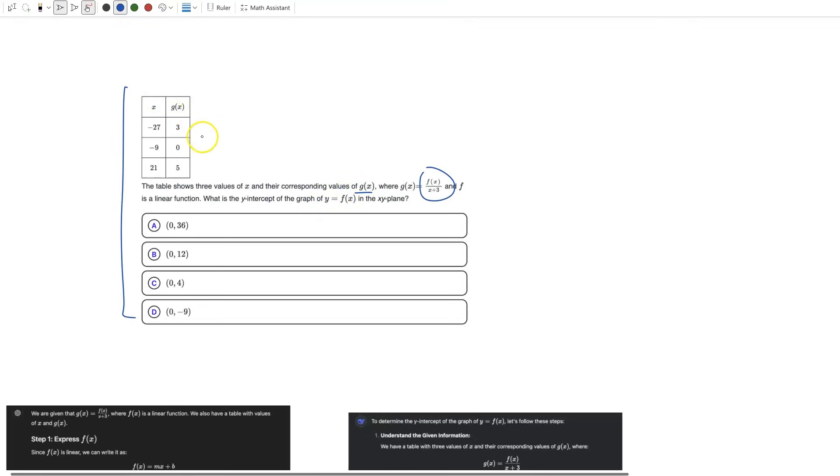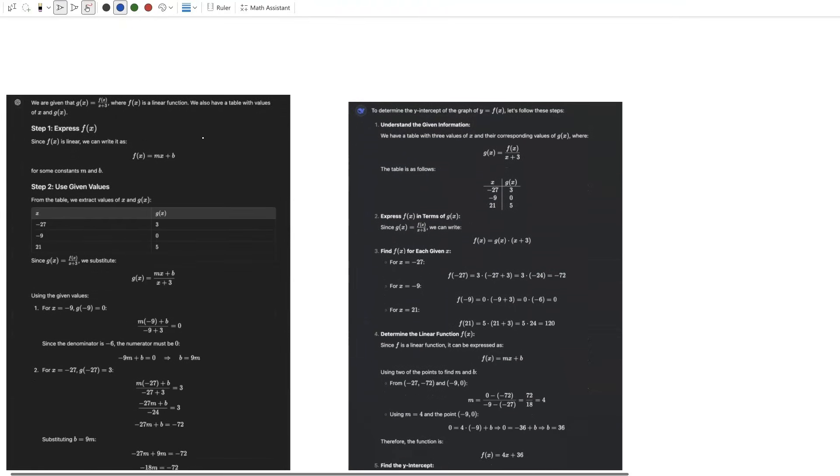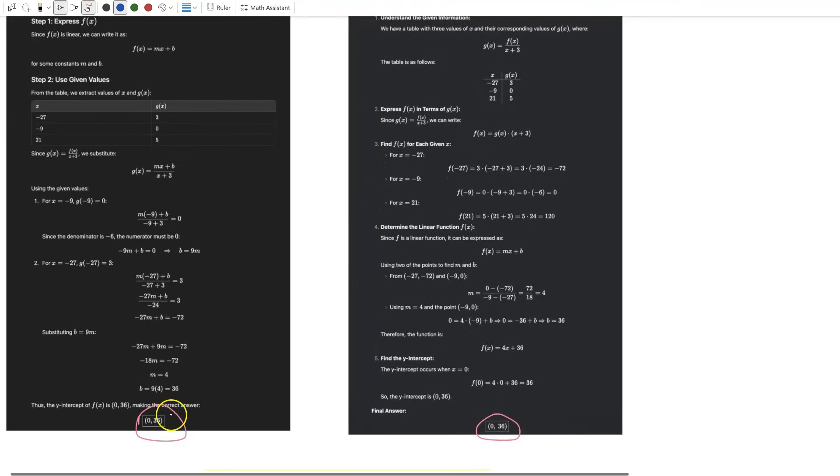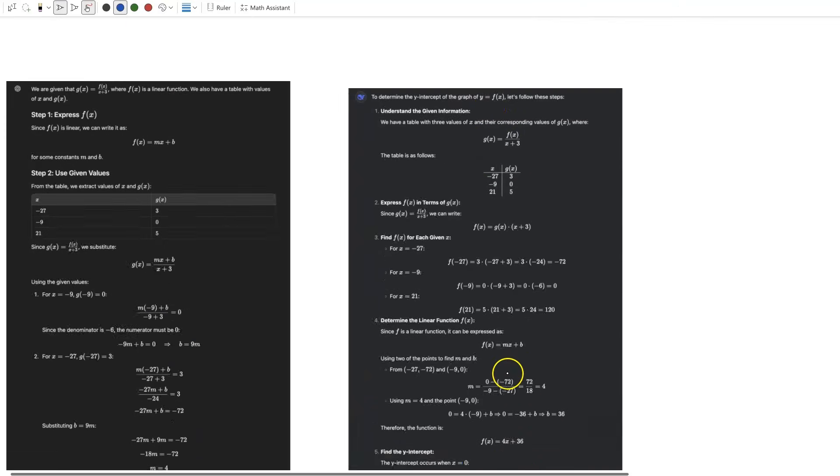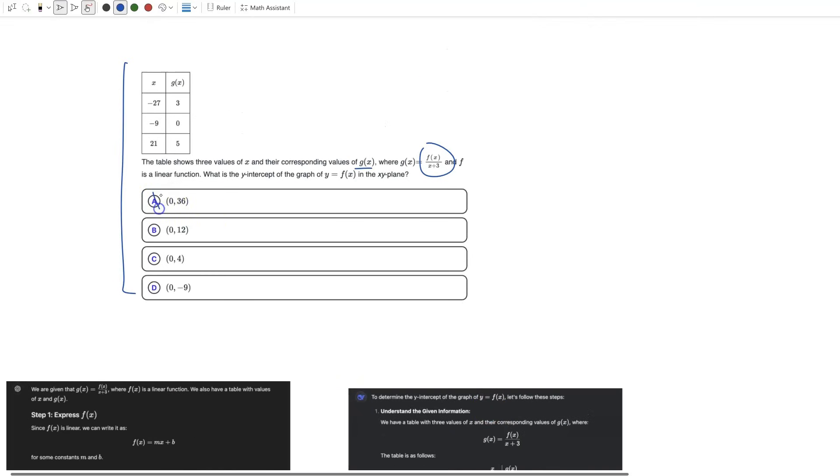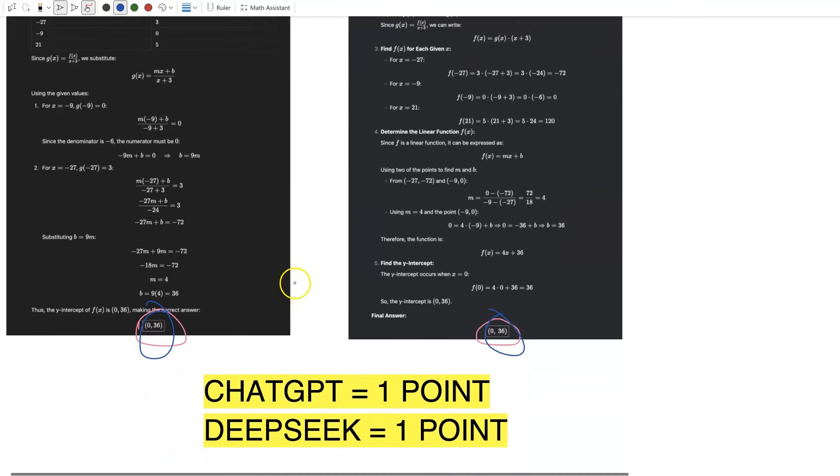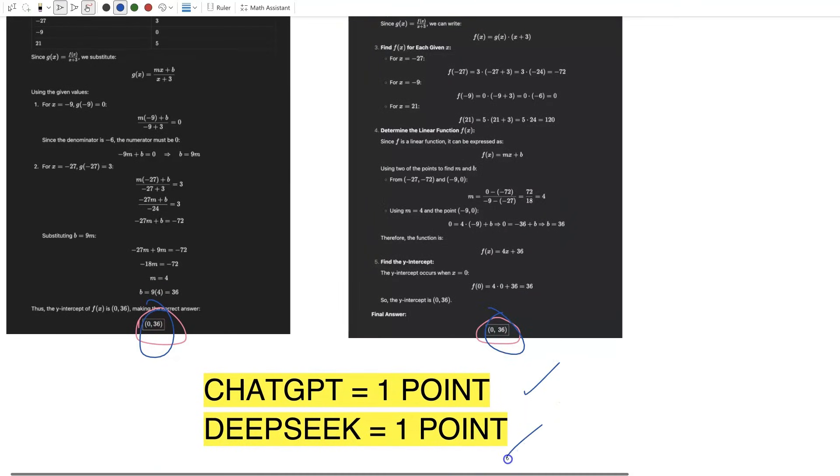Let's see what the AI models say. On the left we have ChatGPT's response and on the right we have DeepSeek's response. You can see they both get the same answer and both of those answer choices are correct. Therefore our answer here is A, and both ChatGPT and DeepSeek are going to get one point on the board.